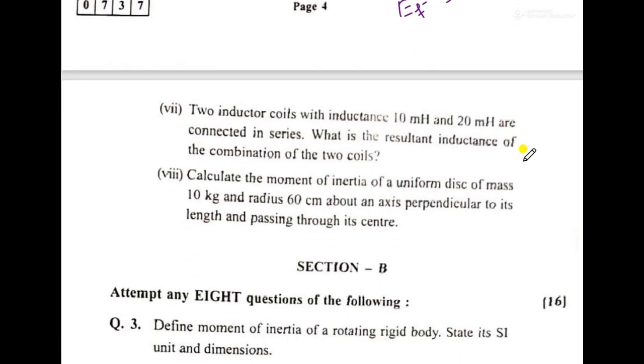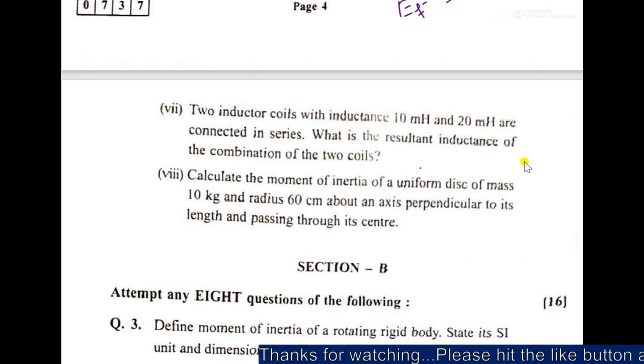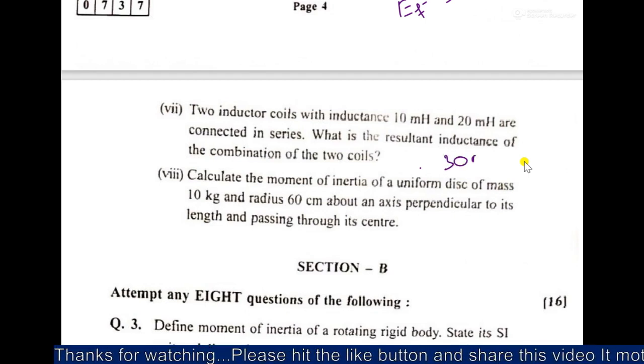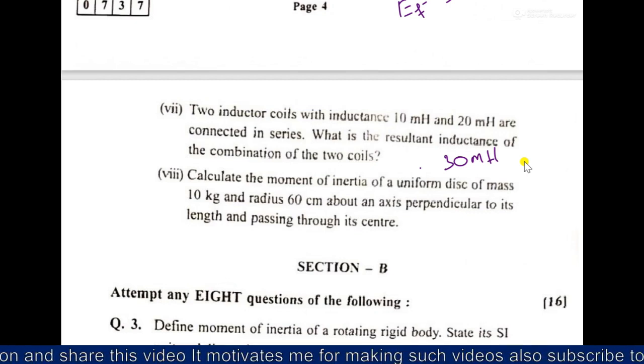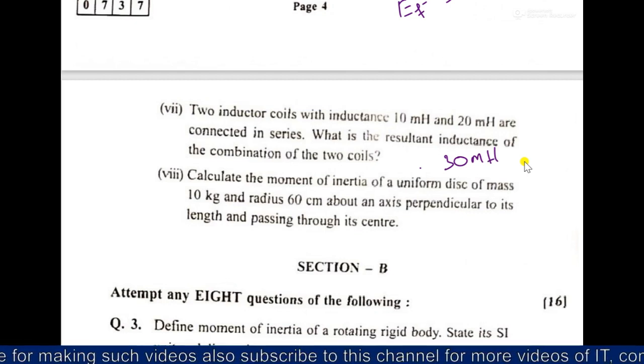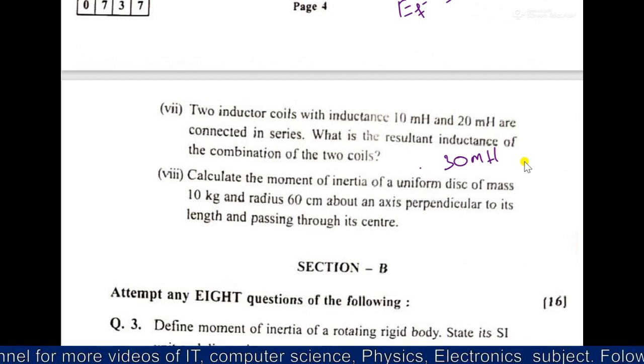Then after this, two inductor coils with inductance 10 mH and 20 mH are millihenry connected in series. So it's easy, resultant, that means you have to add both. So it will come as 30 mH, resultant inductance of the combination of two coils, you can say addition of both, the first inductance and the second of that coils, so 30 millihenry.